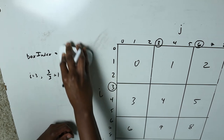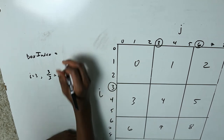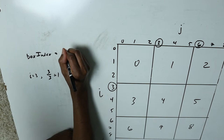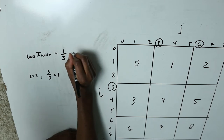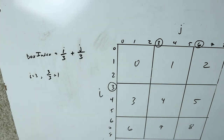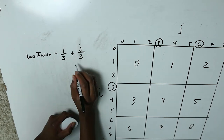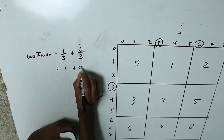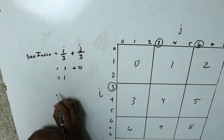Let's modify the formula. If i equals three and j equals zero, box_index = (i / 3) + (j / 3), which gives us one. Thus if we multiply the box row by three we can get three as the current box index at those coordinates.